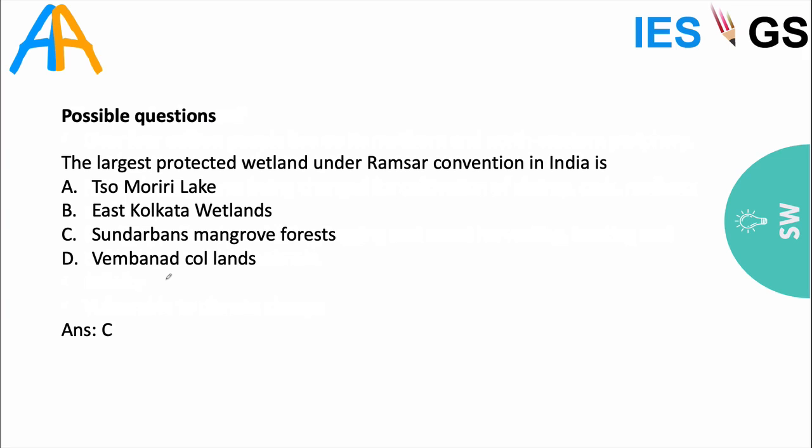A possible direct question: 'Largest protected wetland under Ramsar Convention in India is?' — which can be easily answered from this news. More difficult questions could relate to the significance of wetlands or conservation strategies. The answer is C.